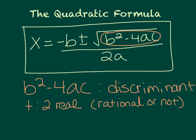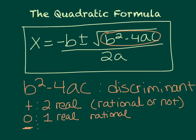If b² minus 4ac equals zero, the positive square root of zero is the same as the negative square root of zero — it's all zero — so you just have one real solution, and it would be rational. And if your discriminant is negative, then you're going to try to take the square root of a negative number. You'll get an imaginary solution — plus or minus — so you get two complex or imaginary solutions. And since imaginaries aren't rational or irrational, you don't have to break it down into one of those.